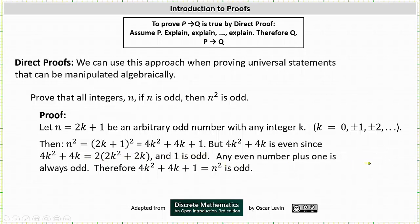Any even number plus 1 is always odd. Therefore we have our conclusion: 4k² + 4k + 1 = n² is odd, and the proof is complete. I hope you found this helpful.